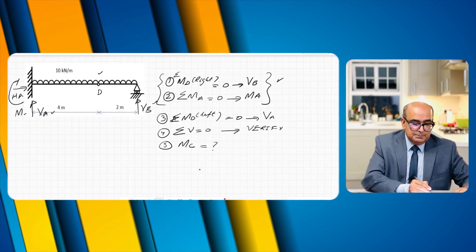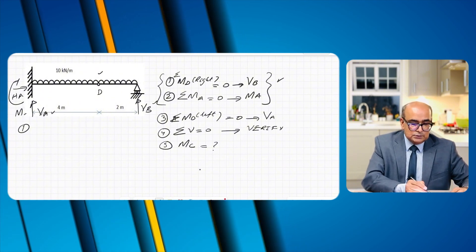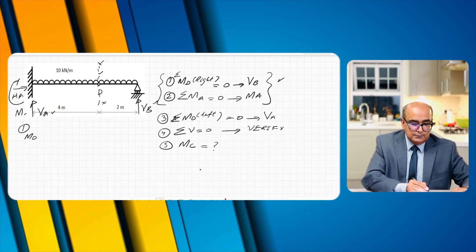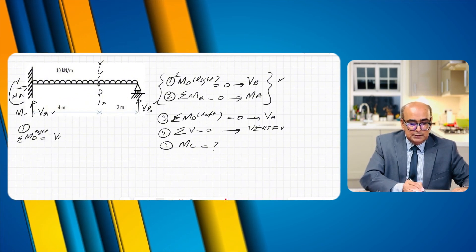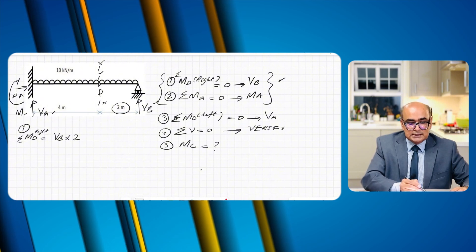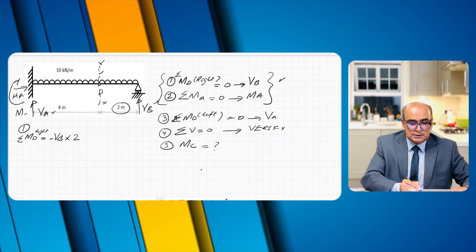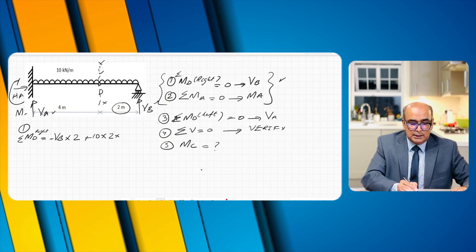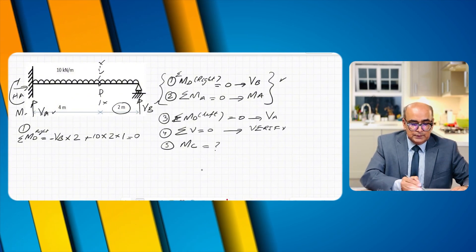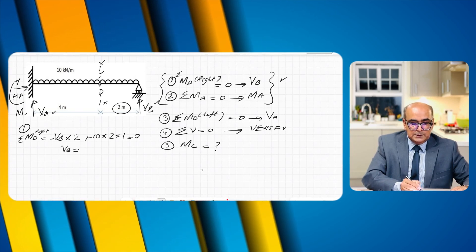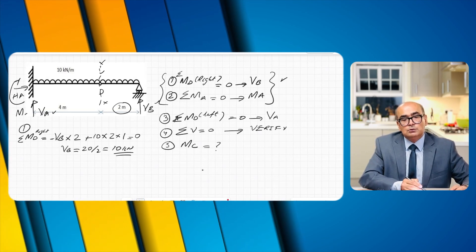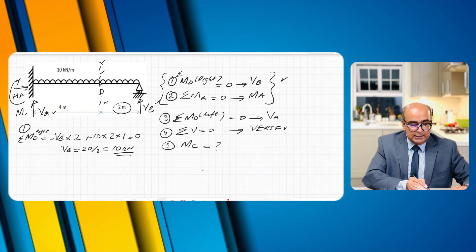Finding the moment at D from the right: taking a section at D, that equals minus VB times 2 plus 10 times 2 times 1 equals zero. From here, VB equals 20 divided by 2, giving VB equals 10 kilonewtons.